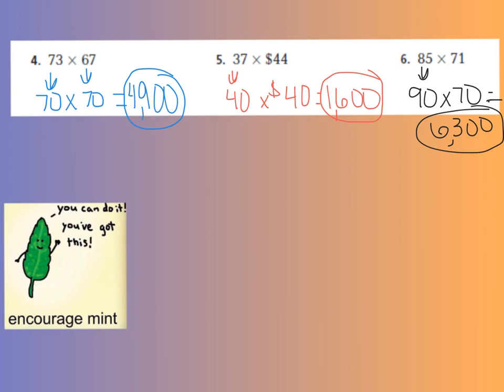For number 5, we have 37 rounds to 40, and 44 rounds to 40 as well. And 4 times 4 gives me 16, plus our two zeros, which is 1,600.